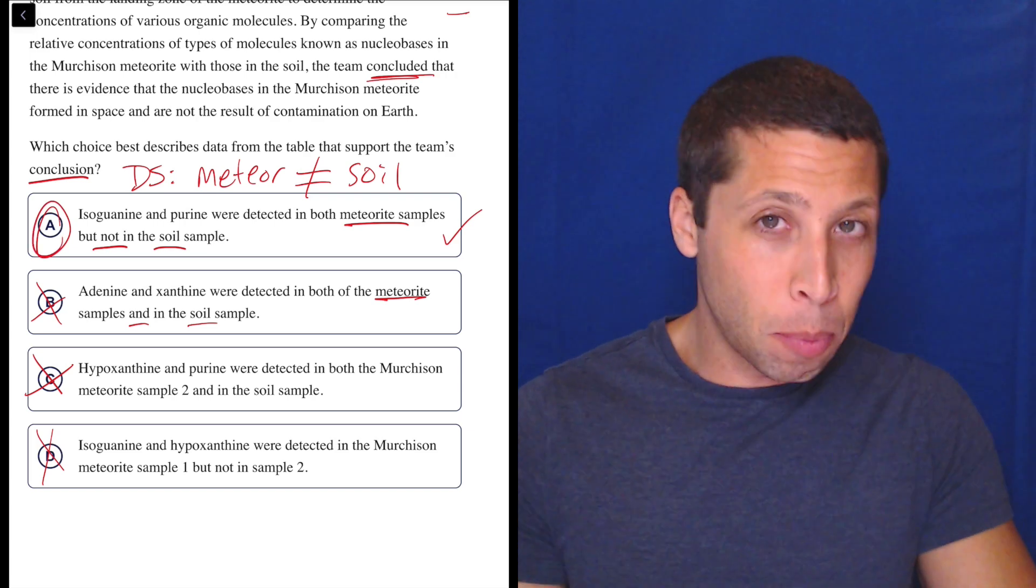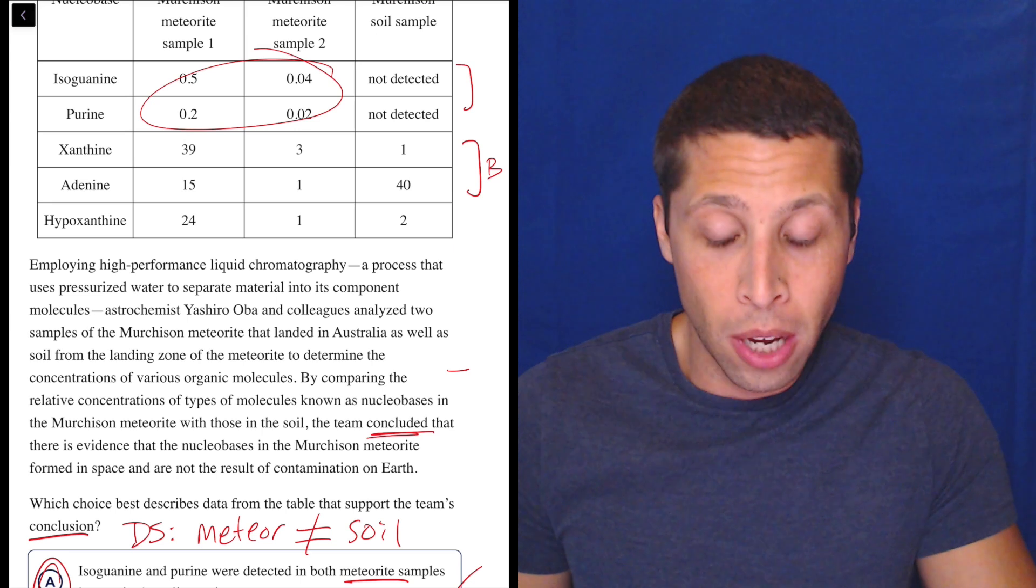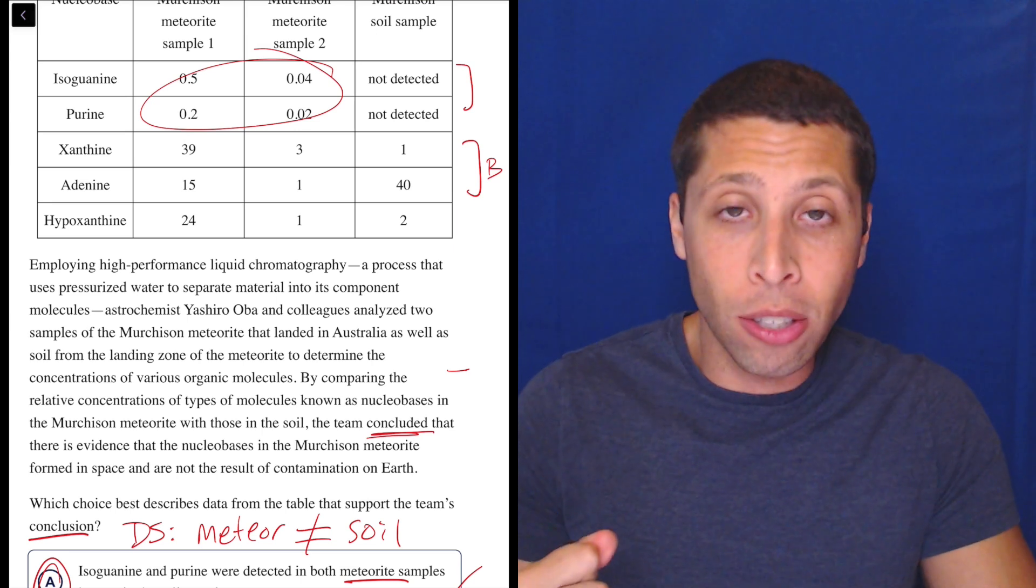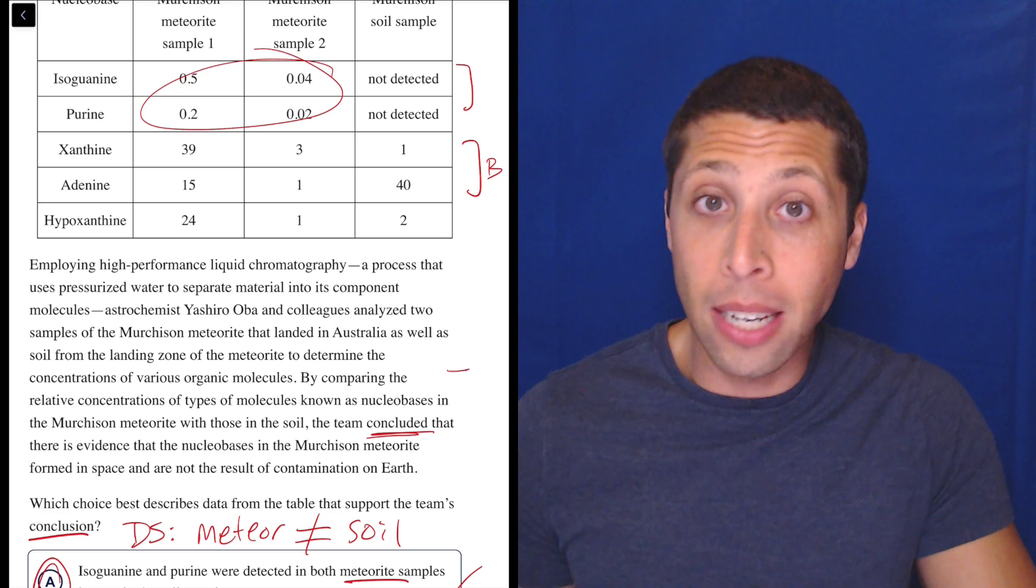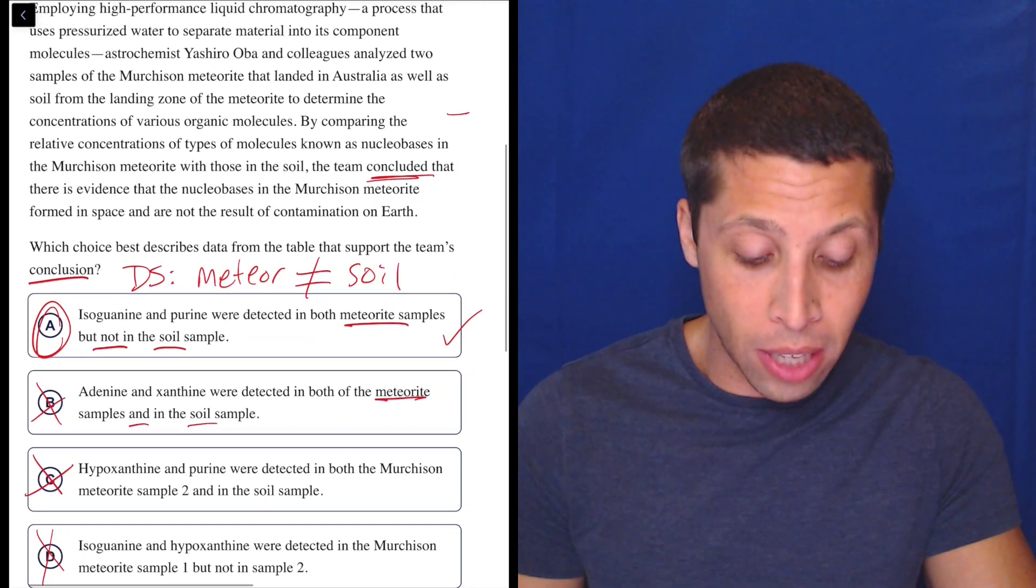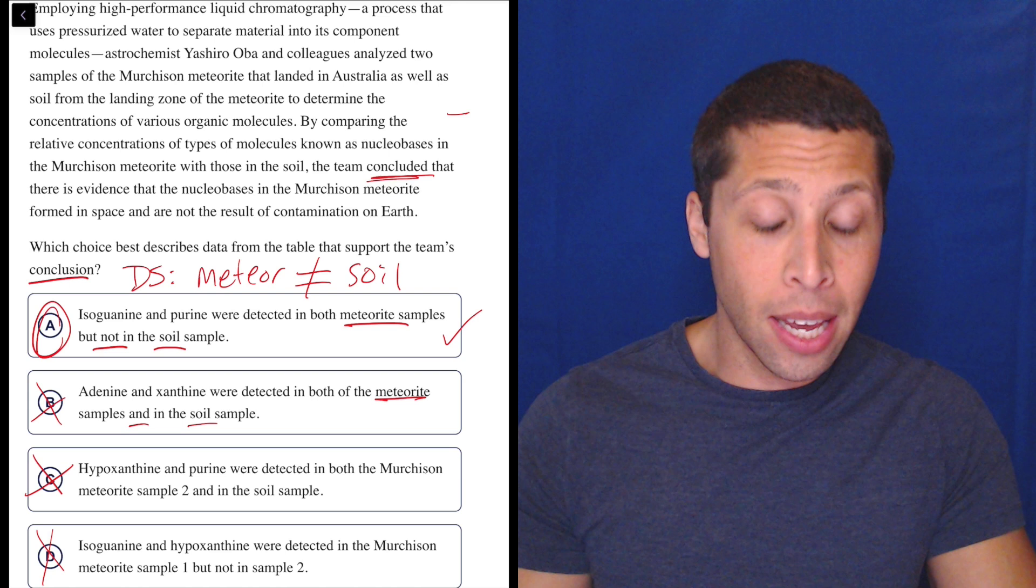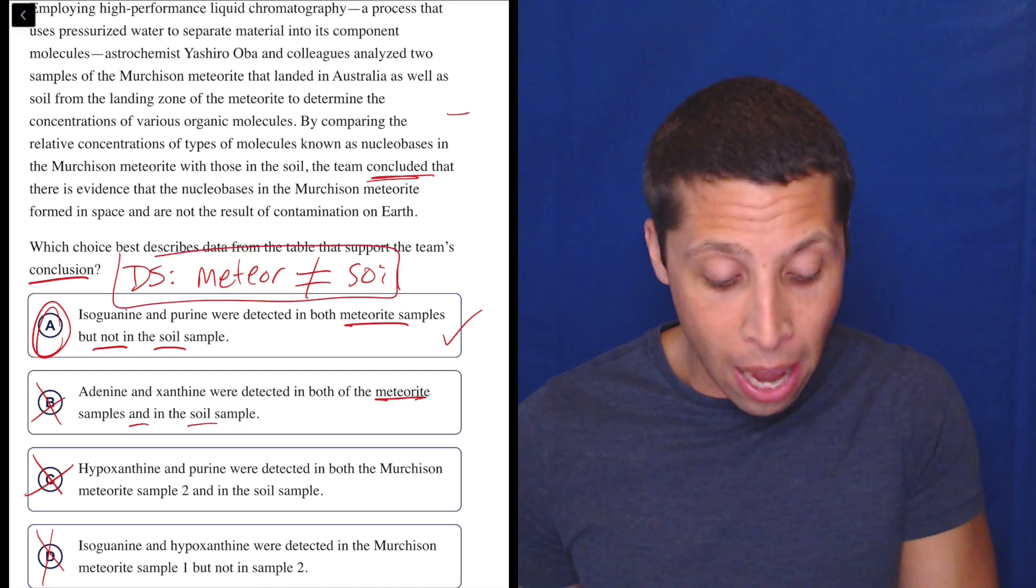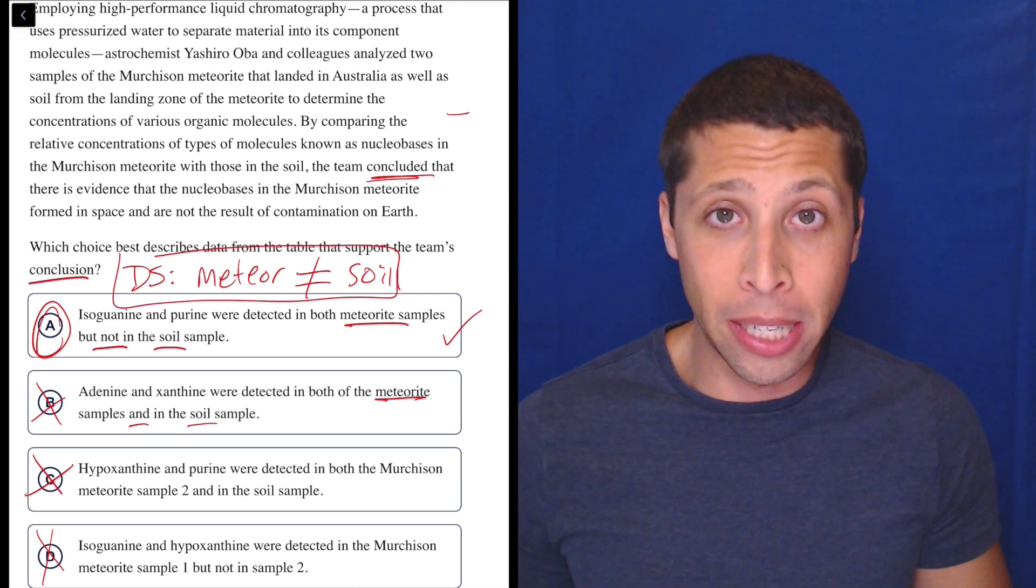So, notice that in this particular question, the chart didn't really matter that much. I didn't know that when I started, but this really wasn't one about true and false data in the chart. This was more about understanding what they wanted, what this conclusion was, simplifying it. I would have written this down on my page. Just to be totally clear, you get scratch paper for reading. Use it.